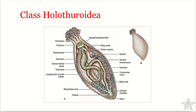The ring canal of the water vascular system encircles the oral end of the digestive tract. You can see the ring canal here along with the oral tentacles. The oral-aboral axis is very elongated, with the anus and mouth on opposite sides. The ring canal gives rise to one to ten polian vesicles, and five radial canals, along with canals of the tentacles, branch from the ring canal.